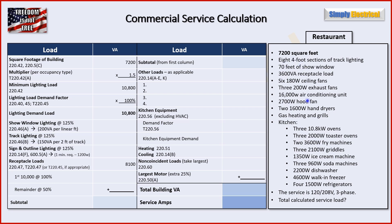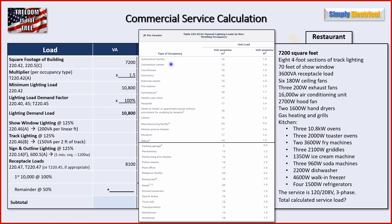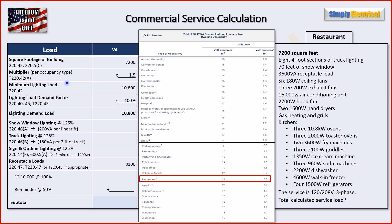We have all our data and we're going to start plugging it into our chart. We start on the left by getting the square footage — we are told we have 7,200 square feet, so we plug that in. Then we need our multiplier from Table 220.42A, which lists different occupancy types and gives a volt-amp per square foot on the right. We go down to restaurant and get 1.5 as our multiplier. So 7,200 times 1.5 is 10,800 VA — that gives us our minimum lighting load.